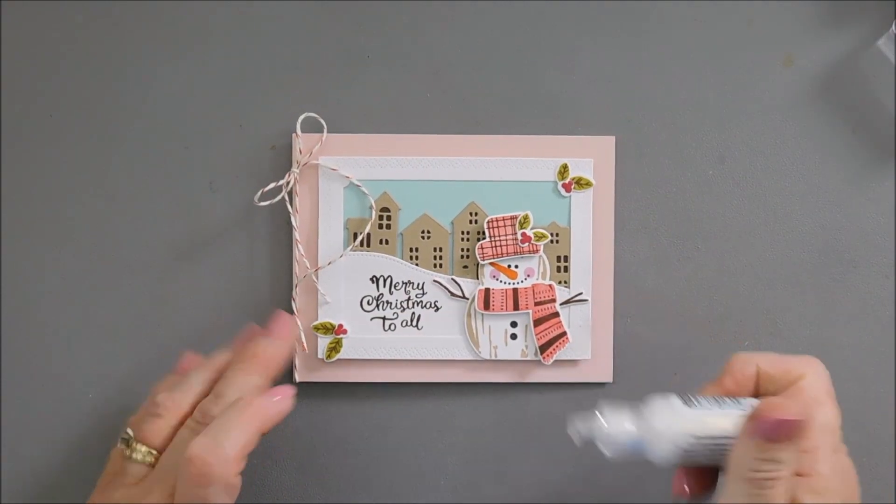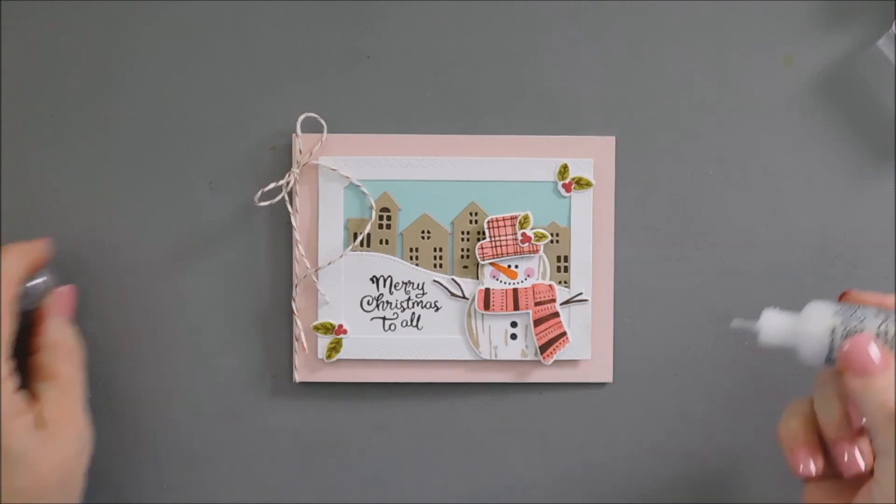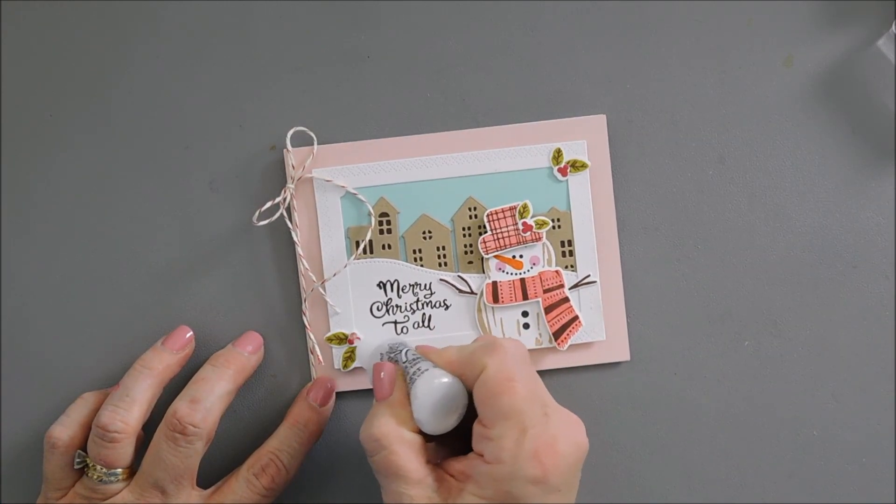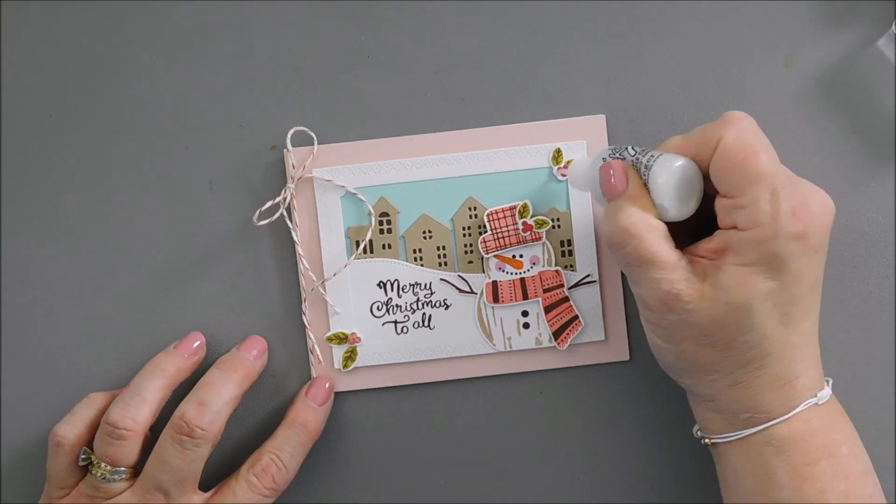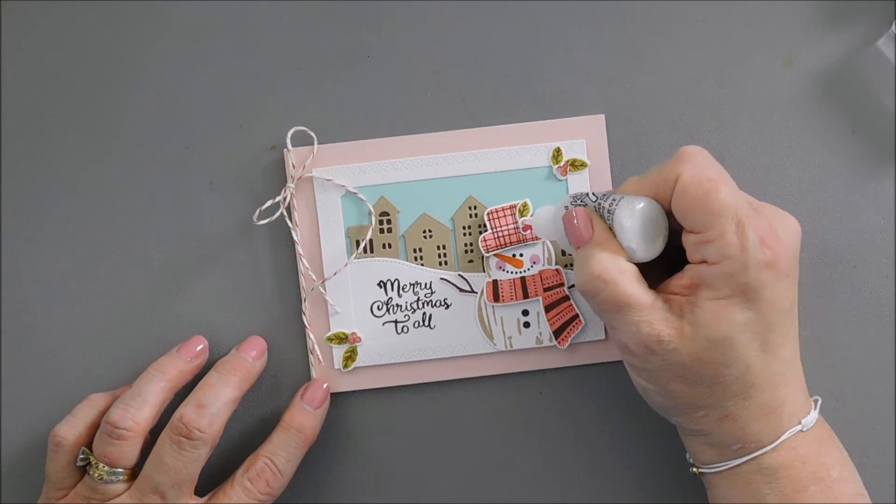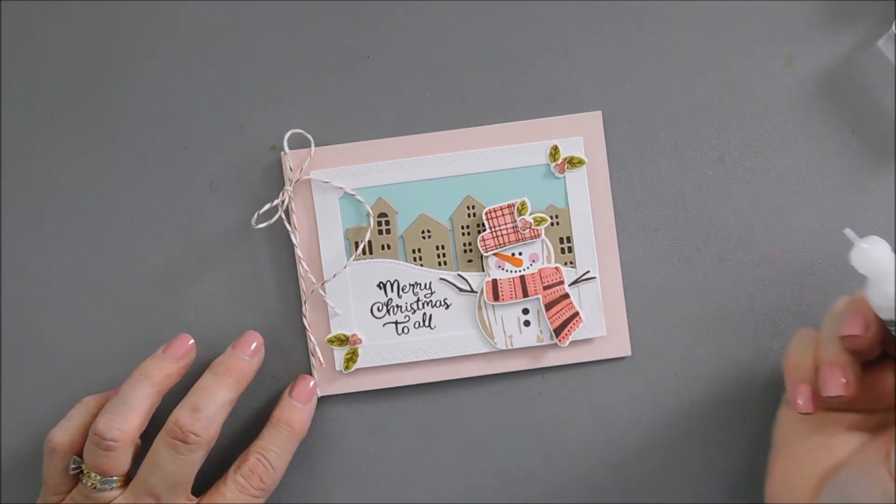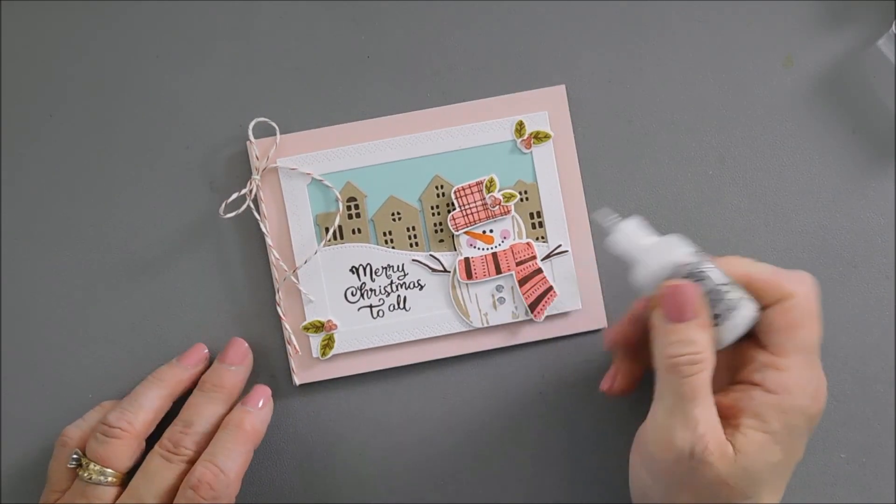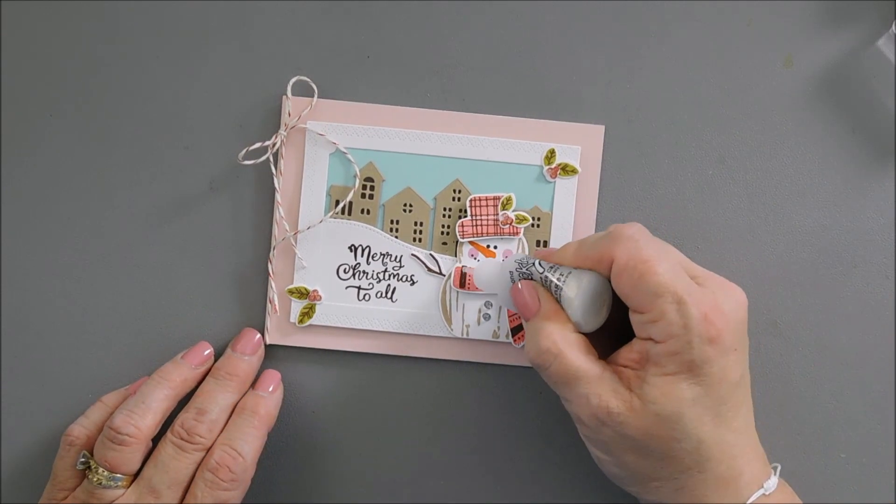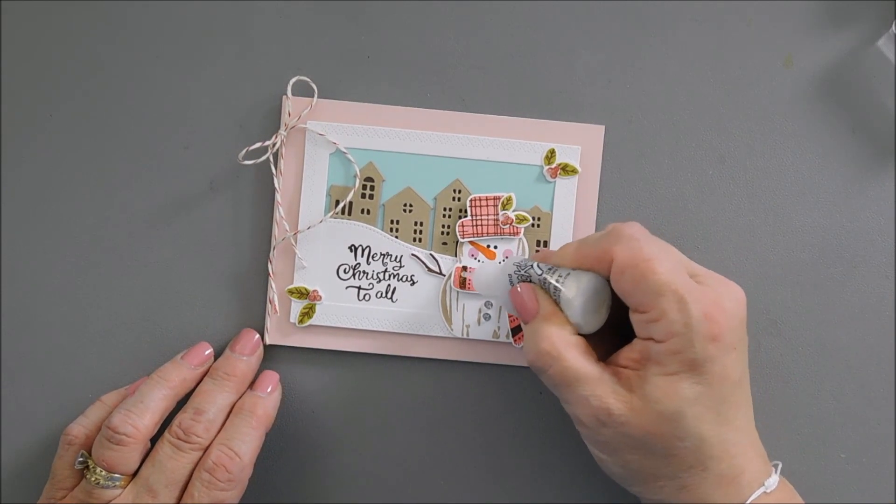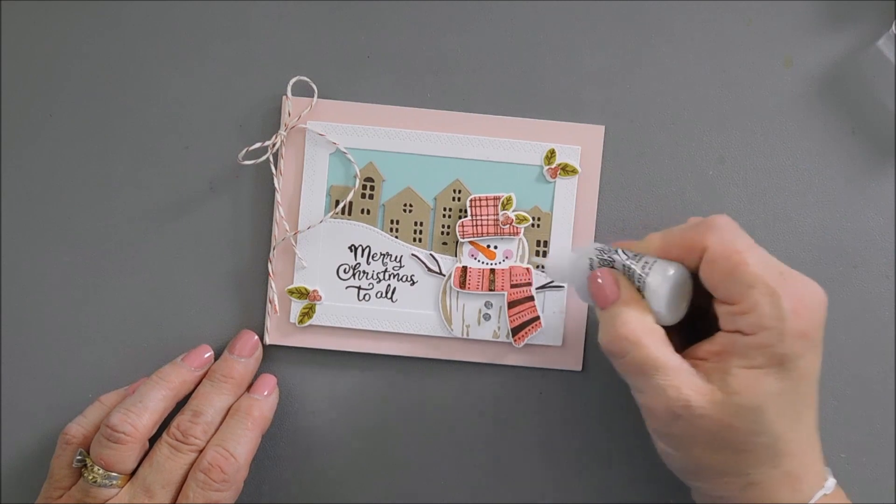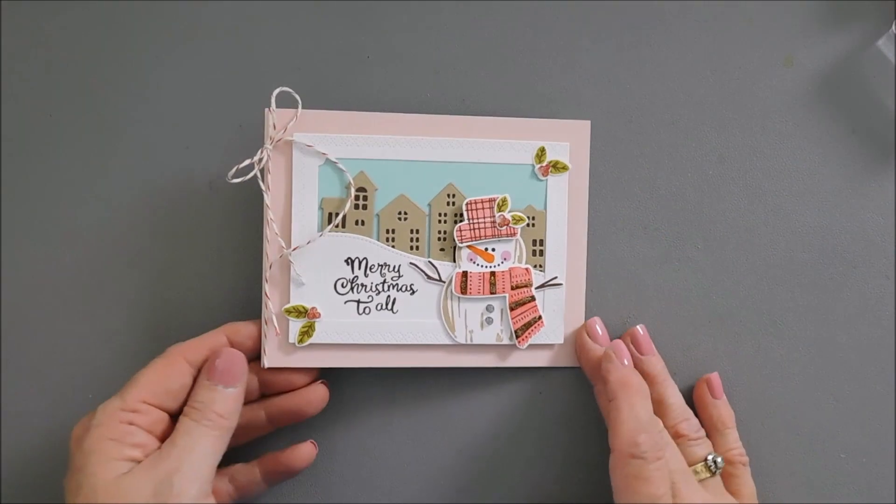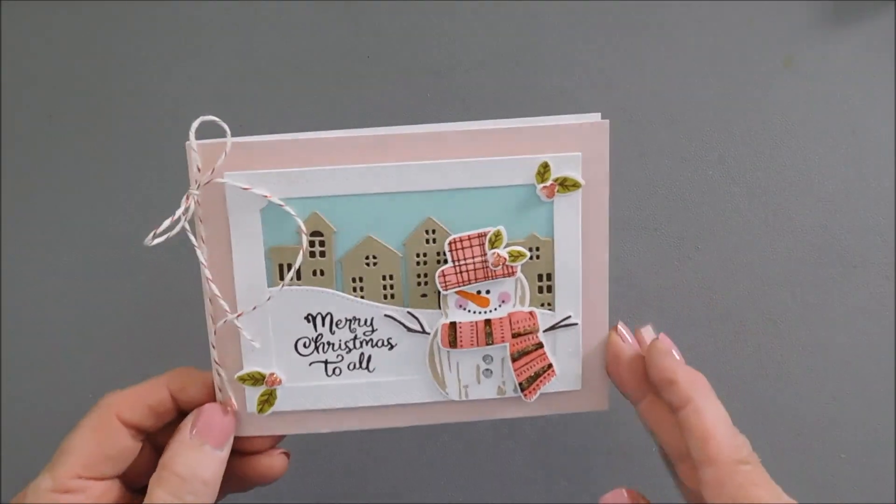Last but not least, I'm going to bring in some diamond stickles and I'm going to go over the berries here, give them a little bit of sparkle. Also the button on our snowman. We'll add some to the stripes too and add a little sparkle. The stripes on our snowman scarf. And then that will finish off our card today for Paper Tray Ink.